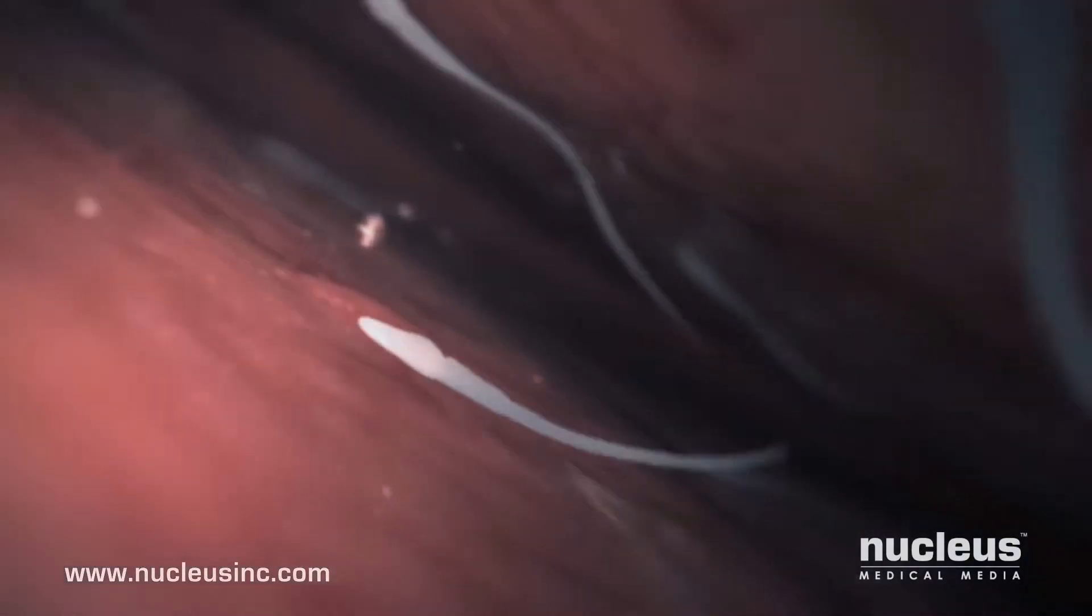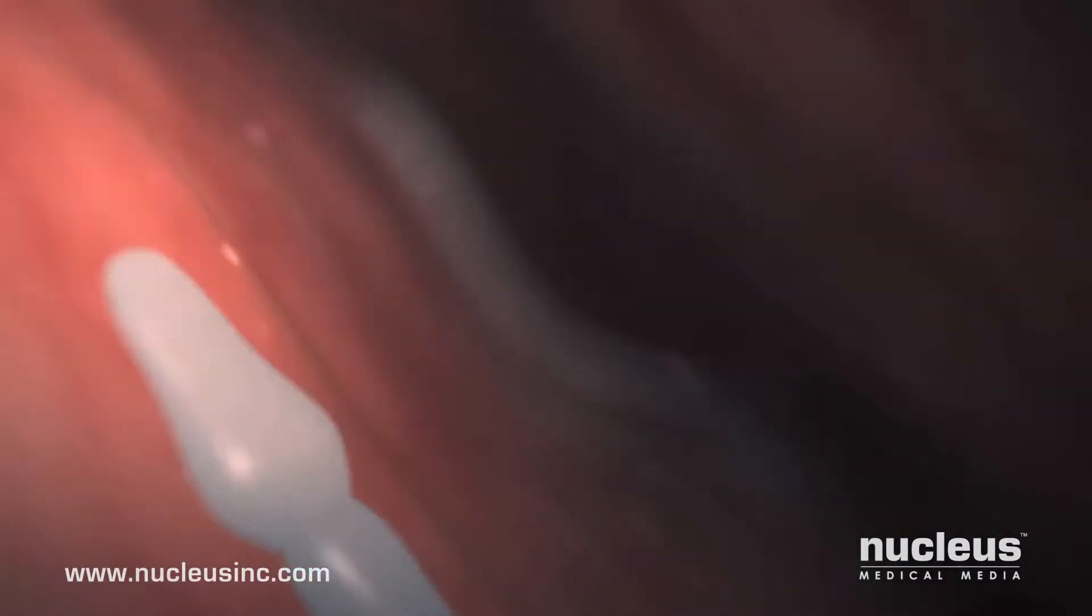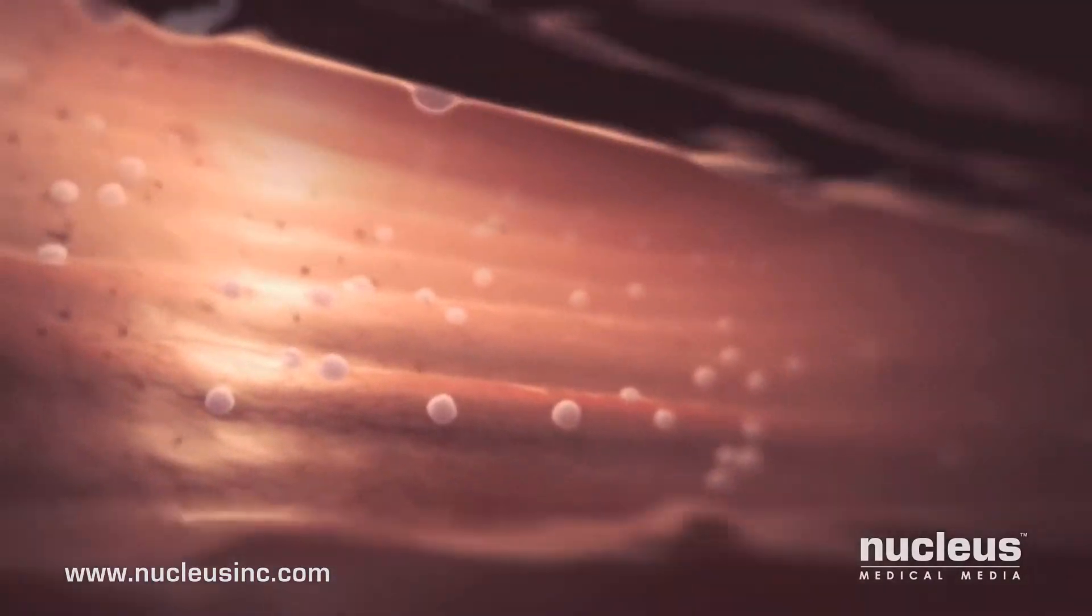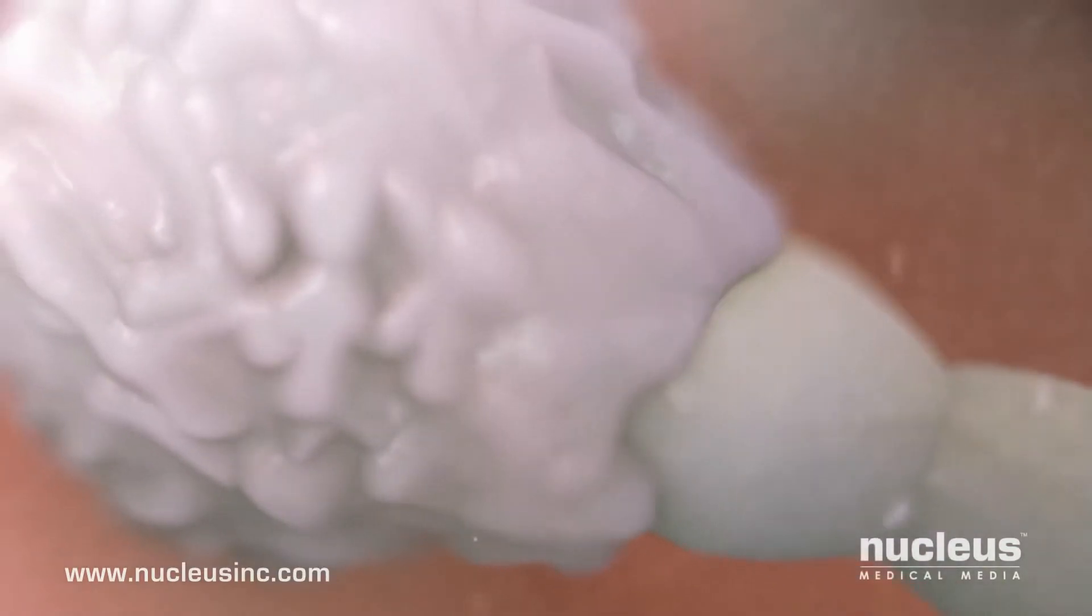Inside the uterus, muscular uterine contractions assist the sperm on their journey toward the egg. However, resident cells from the woman's immune system, mistaking the sperm for foreign invaders, destroy thousands more.